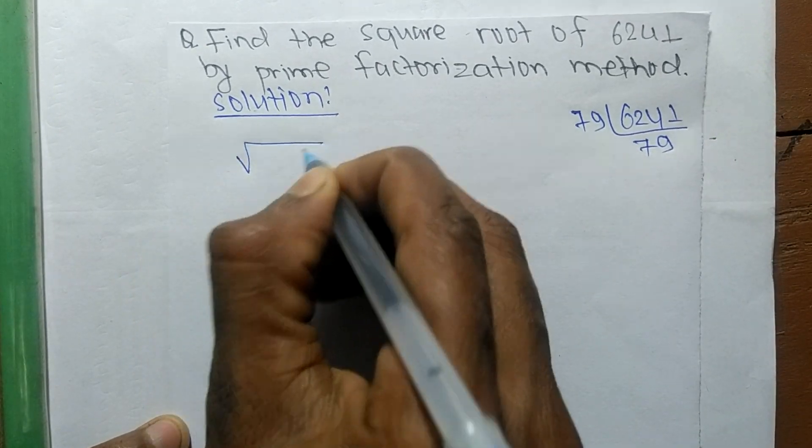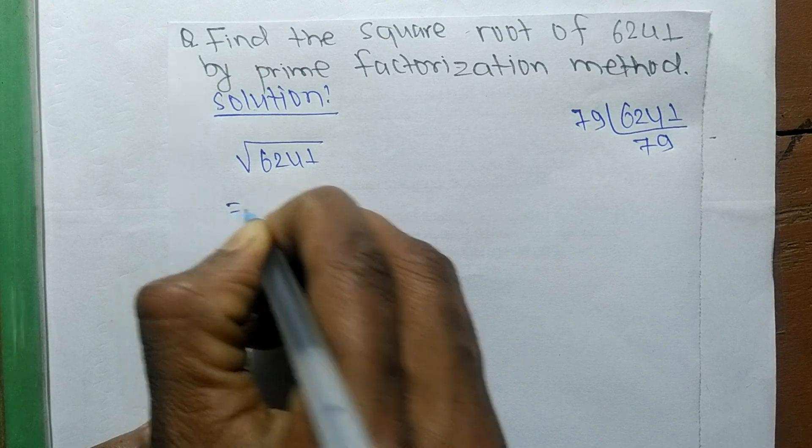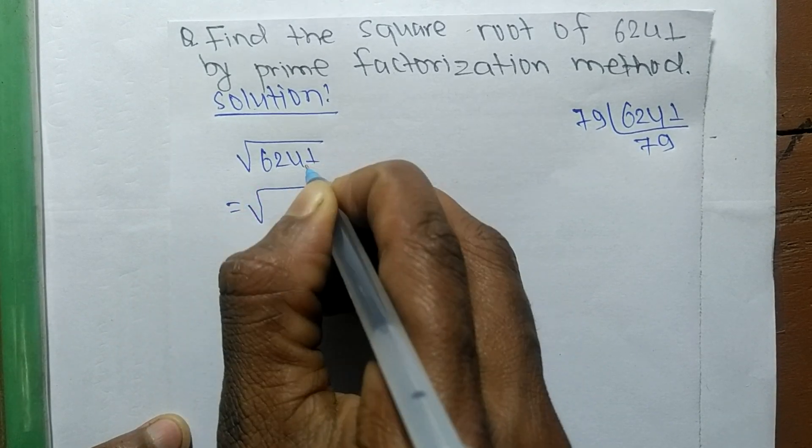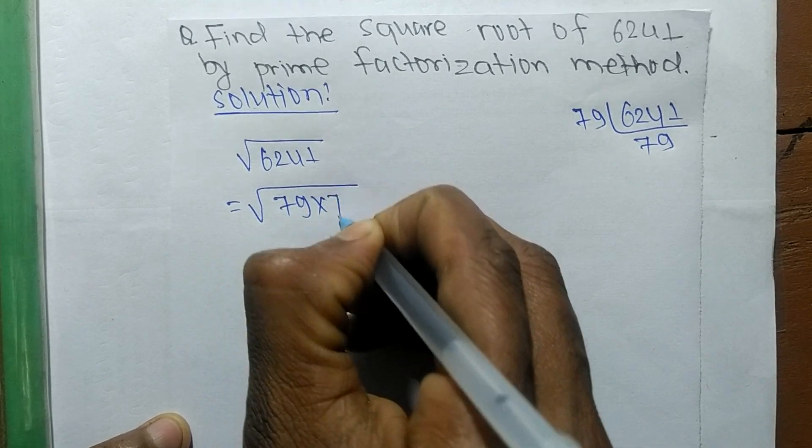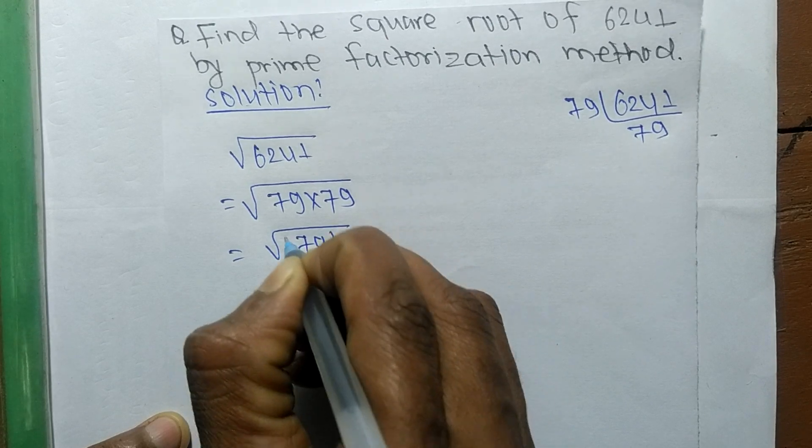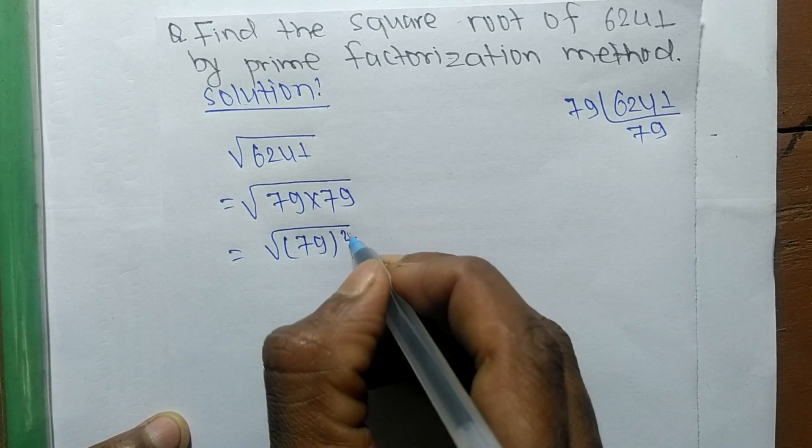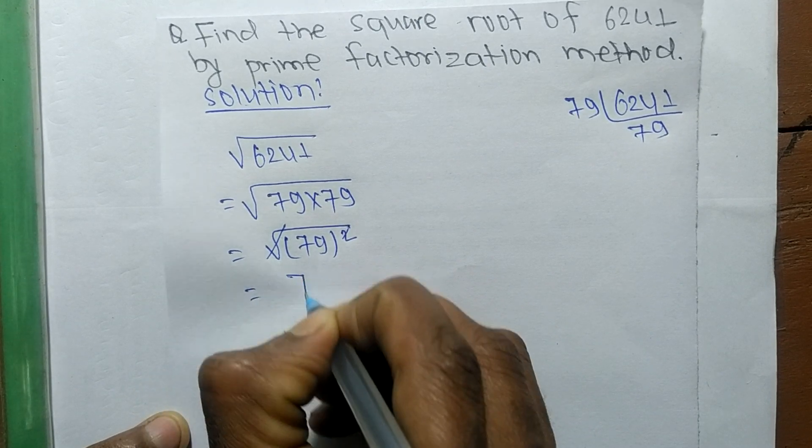Now we find the square root of 6241. From the prime factors of 6241 we can write 79 times 79, so it is 79 squared. A square and a square root cancel each other.